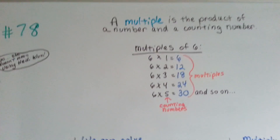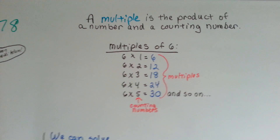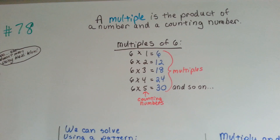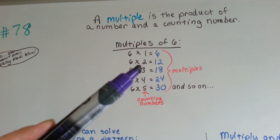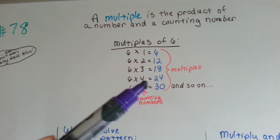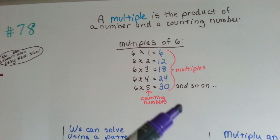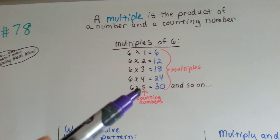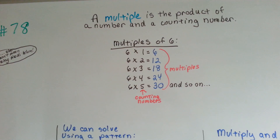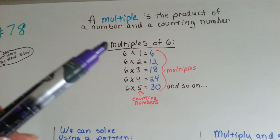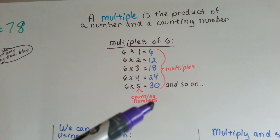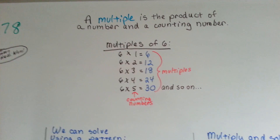If you remember from before, a multiple is the product of a number and a counting number. The multiples of 6 are 6, 12, 18, 24, 30, and it goes up higher and higher. The counting numbers are 1, 2, 3, 4, 5, 6, 7, 8, like that. So it's the product of a counting number and the number.